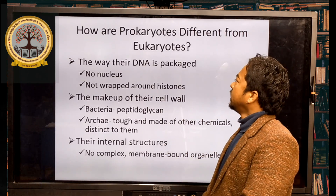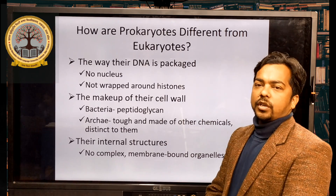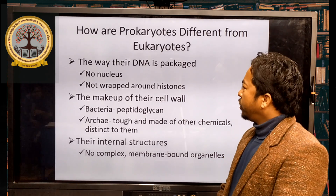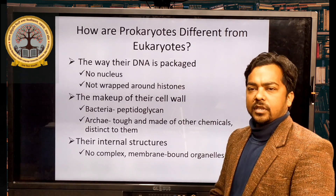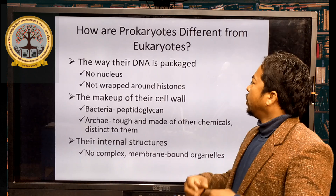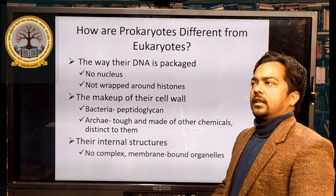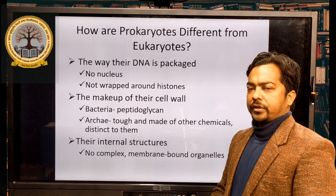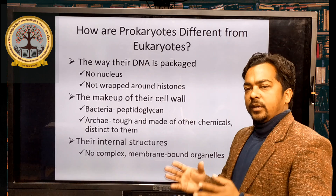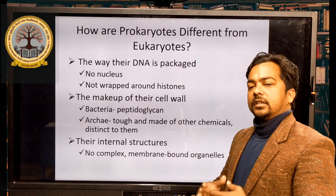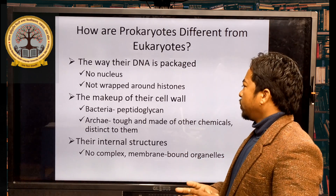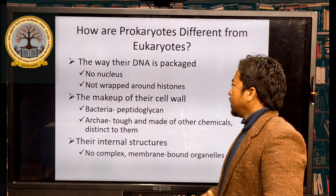First of all, how are prokaryotic cells different from eukaryotes? Prokaryotic cells have no well-developed nucleus. This nucleus is known as a nucleoid, and it is not wrapped around histones. Histone proteins lack in prokaryotic cells but are found in eukaryotic cells. So in prokaryotic cells, the lack of a defined nucleus means genetic material is known as a nucleoid.